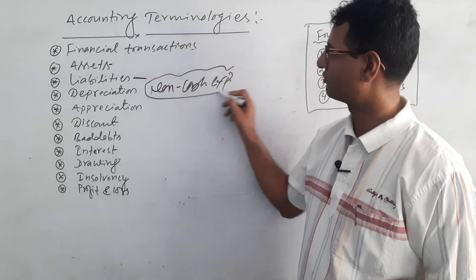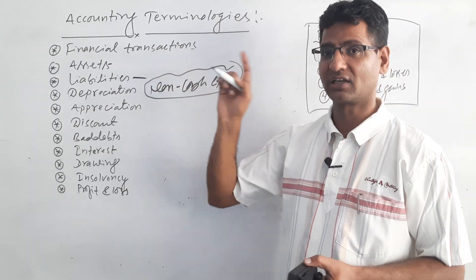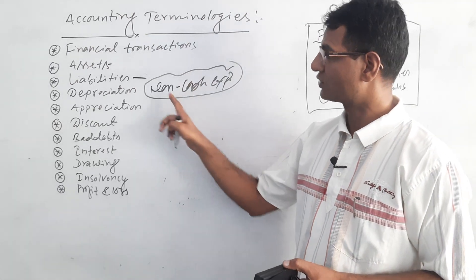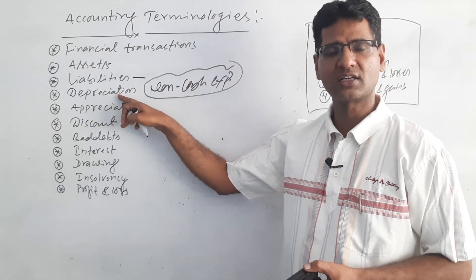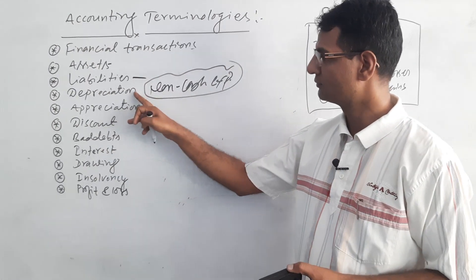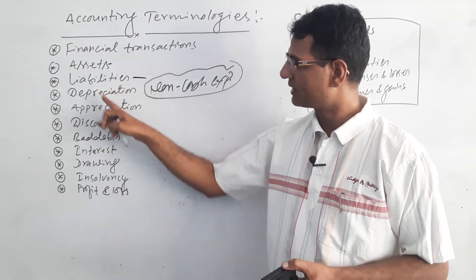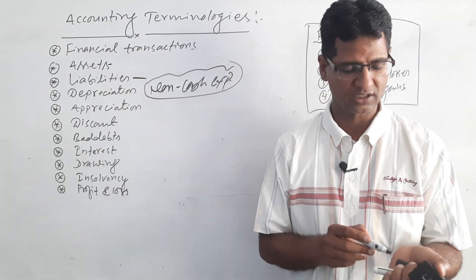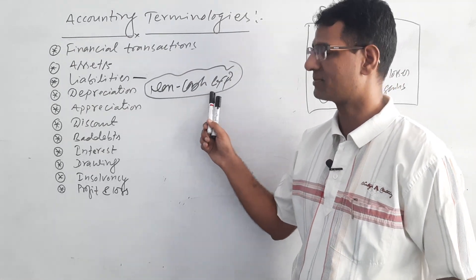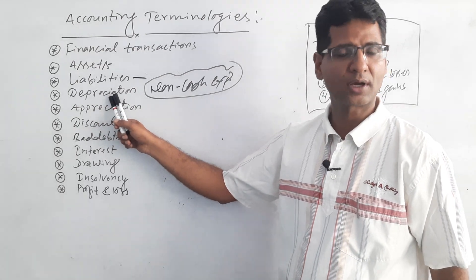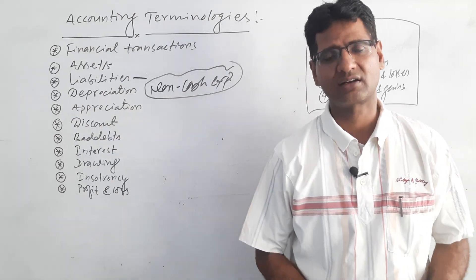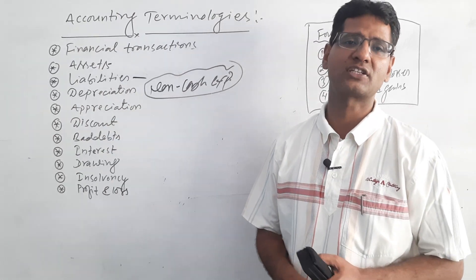There are three types of transactions: cash transactions, credit transactions, and non-cash transactions. Depreciation, amortization, and accrued salary are non-cash transactions. All fixed assets are depreciated gradually — such expenses are called non-cash expenses. Depreciation decreases profits and decreases tax liabilities, and on the basis of depreciation, the exact fair price of any fixed asset can be calculated.